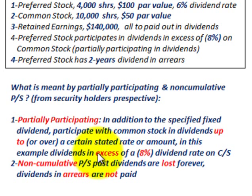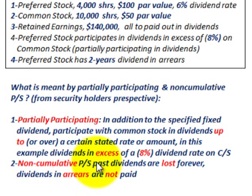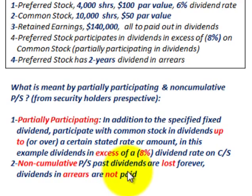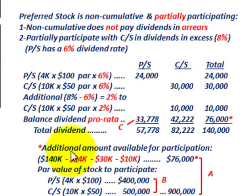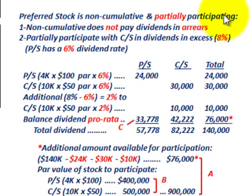In this example, dividends in excess of 8% of the dividend rate on common stock. For non-cumulative preferred stock, past dividends are lost forever — that is, dividends in arrears are not paid. So let's go look at our example, starting with our preferred stock, which is non-cumulative and partially participating.